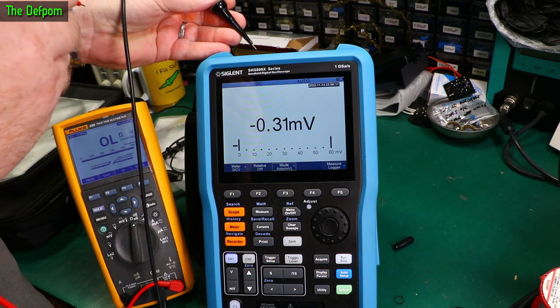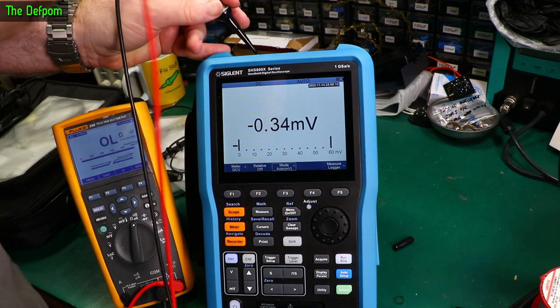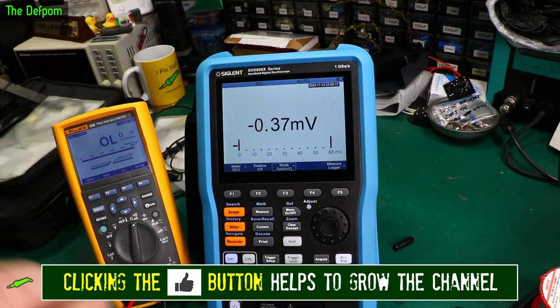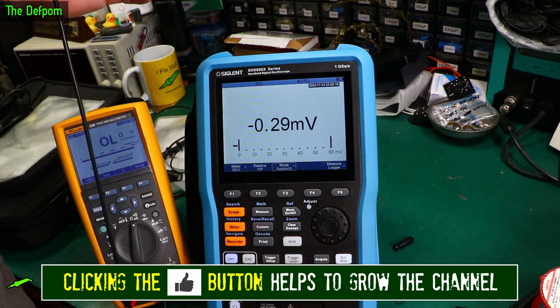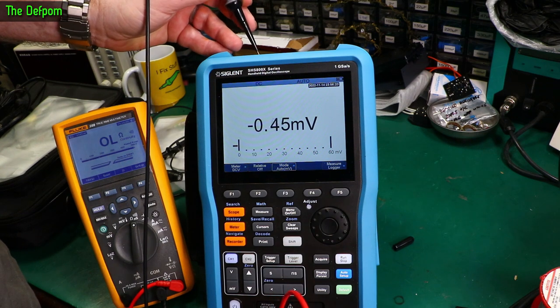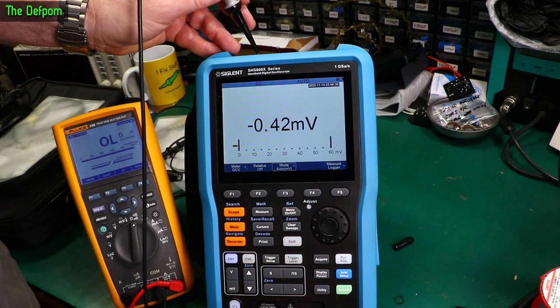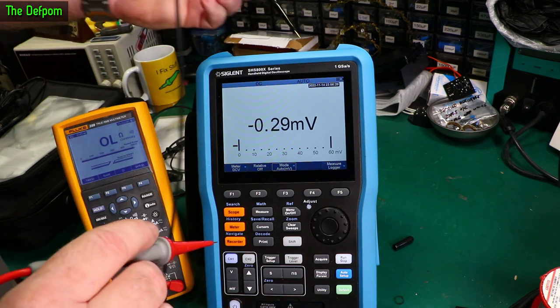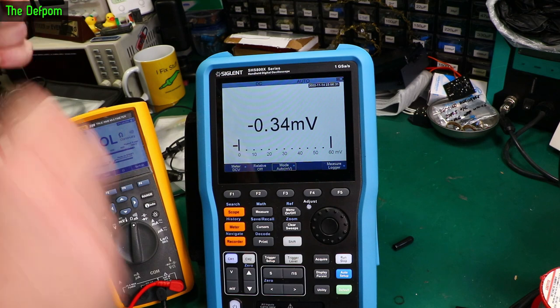Check the continuity between the two earths up here. Yep. They are indeed linked. What about the negative down here. Is this linked to the earth as well? No it's not. Positive. No. Right. So those aren't linked. Just the scope negatives are. Just something to watch out for.